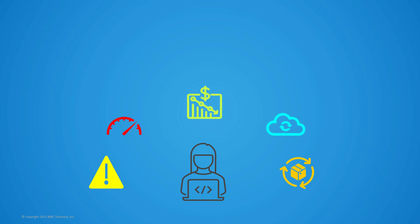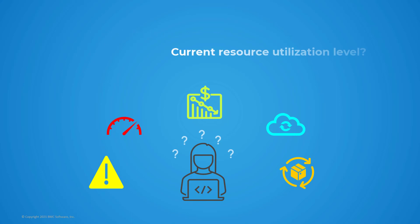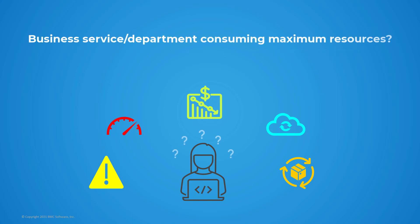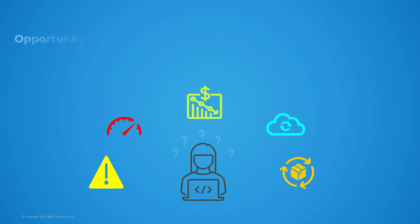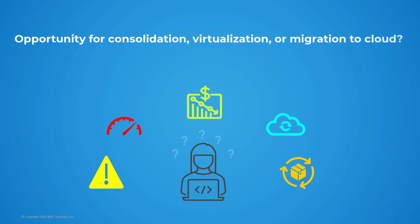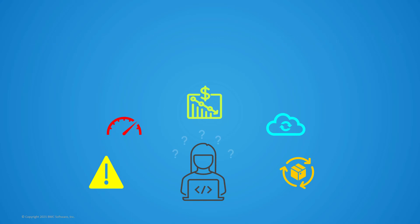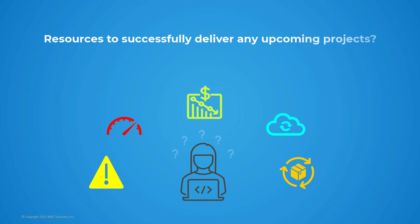On a regular basis, you need to understand: How do I get visibility into all the IT resources? What is the current resource utilization level? Which business service or department consumes maximum resources? Are there any upcoming saturations that might cause performance issues? Is there an opportunity for consolidation, virtualization, or migration to the cloud? How do I ensure I have the resources to successfully deliver my upcoming projects?